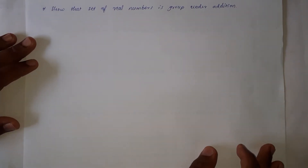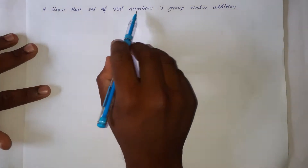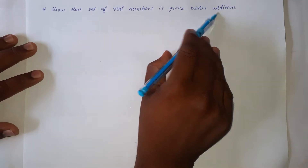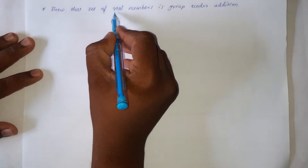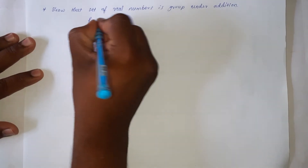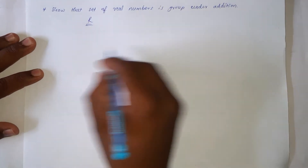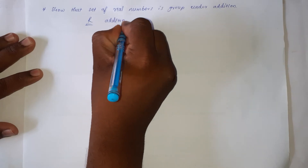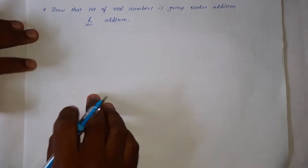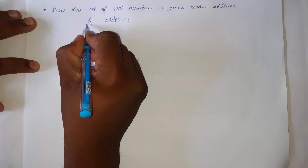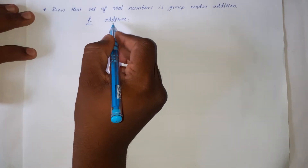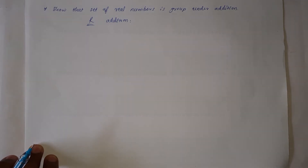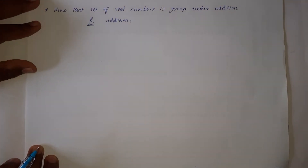The first example is: show that the set of real numbers is a group under addition. Here the given set is the set of real numbers capital R, and the binary operation is addition. We need to prove that the set R is a group under addition.